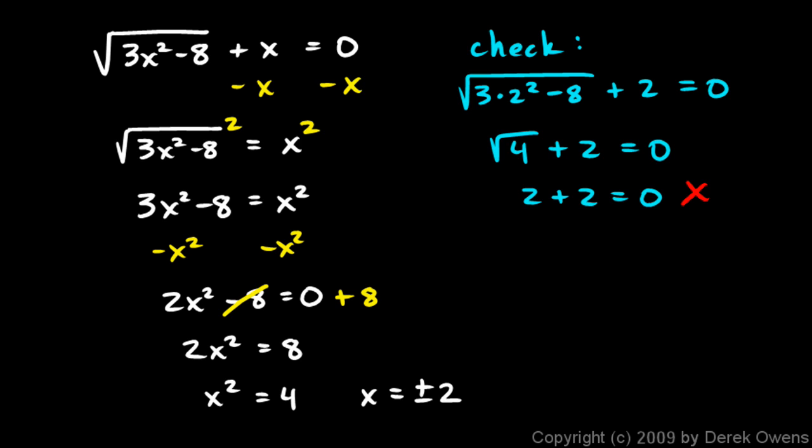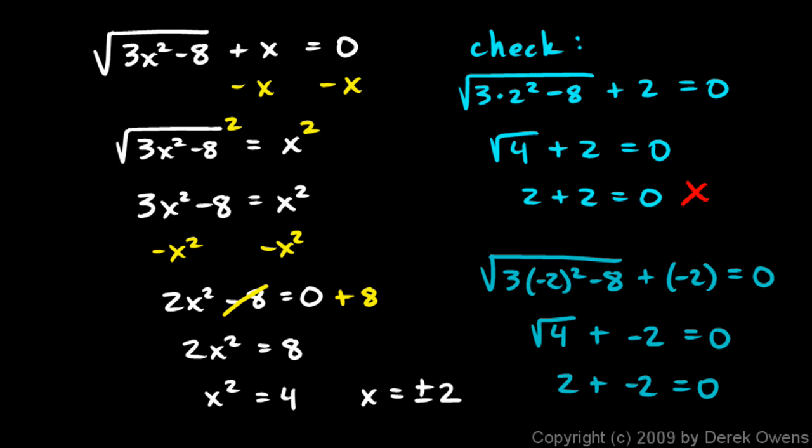Let's try it with negative 2 and see if that works. I'll take the square root of 3 times negative 2 squared minus 8 plus negative 2 equals 0. I'm just taking my original equation and plugging in my answers. I'm plugging in a negative 2 right there for x. When I do this here, I have negative 2 squared is 4 times 3 is 12 minus 8 is 4. I have the square root of 4 plus negative 2. The square root of 4 is 2. 2 plus negative 2 is 0. So that one works. x equals negative 2 is the answer.